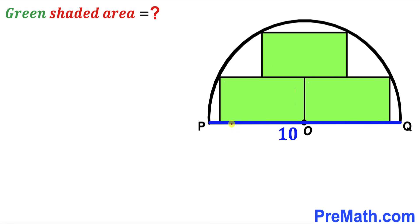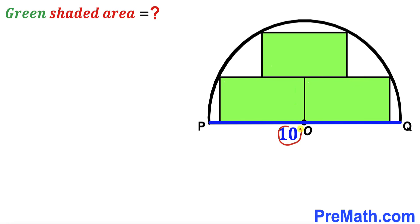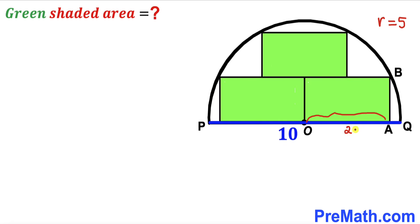Let's get started. We know the diameter of this semicircle is 10 units, so the radius has to be half of 10, which is 5. Let's label the radius lowercase r equal to 5 units. Now let's focus on this rectangle and assume the length AO is 2 times x.